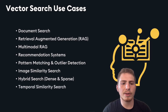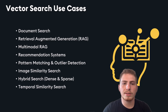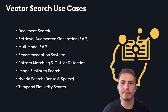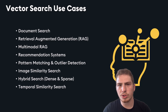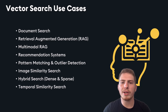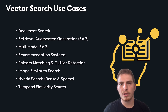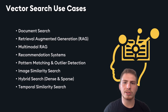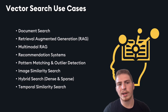Finally, we have temporal similarity search, which is useful for identifying patterns in time series data — useful in fields like finance and climate science. In the next video, we'll dive into vector databases and how they solve some of the challenges in vector search. I really hope you found this video useful, and I'll see you next time.